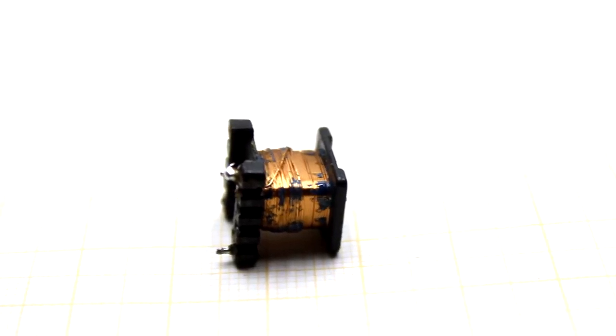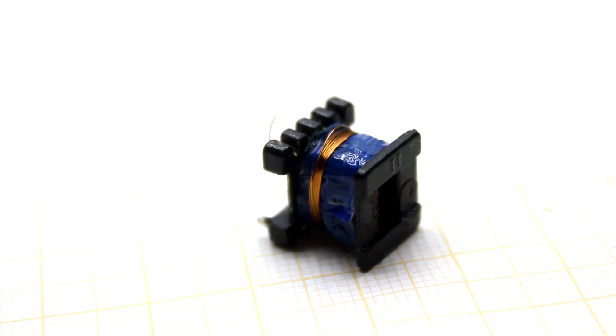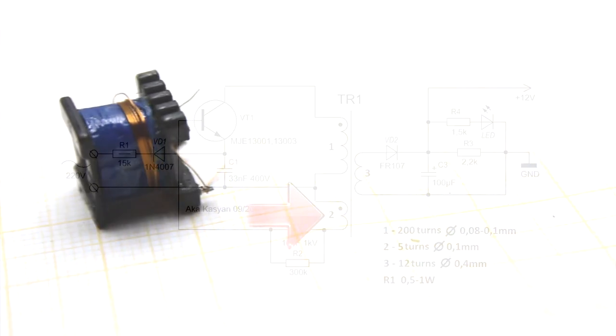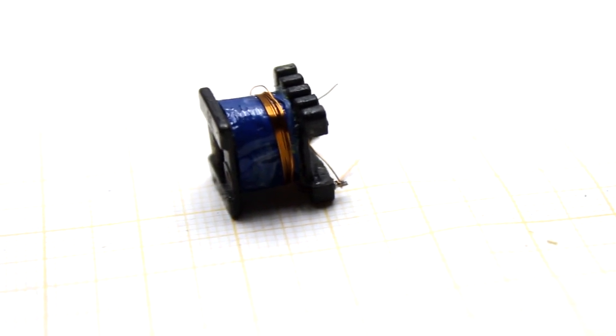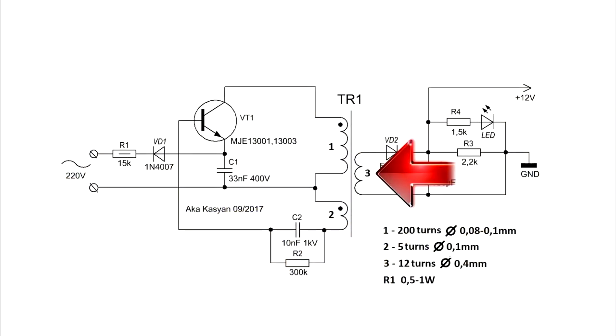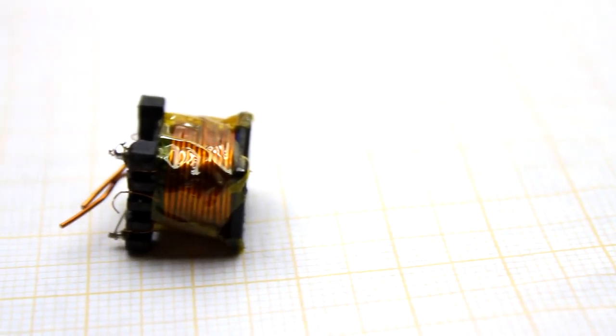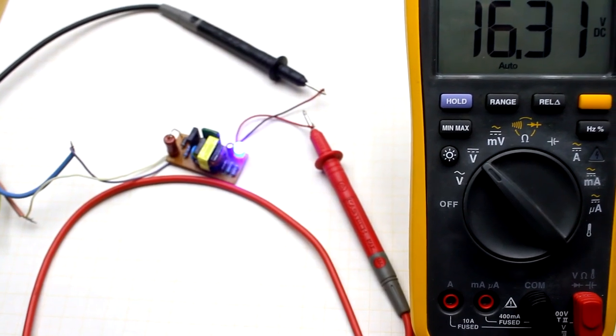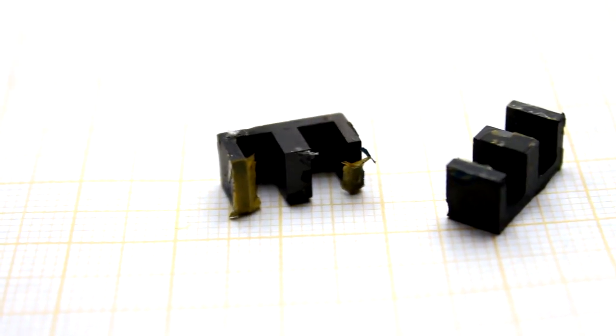The wire diameter is from 0.08 to 0.1 millimeter. Then the insulation is placed, and the same diameter wire is used for the base winding, which contains 5 to 10 turns. Then we make the output winding. The number of its turns depends on what voltage you need. I think it will be one volt per turn. Where can you get the core for winding?